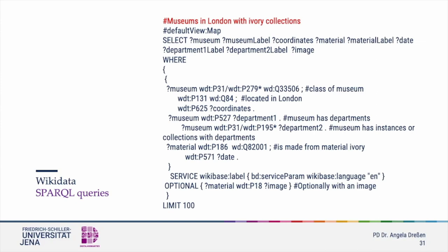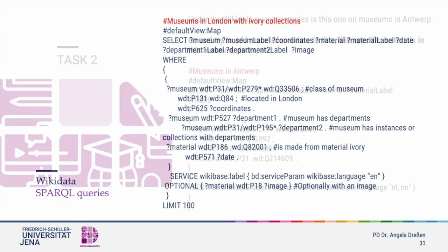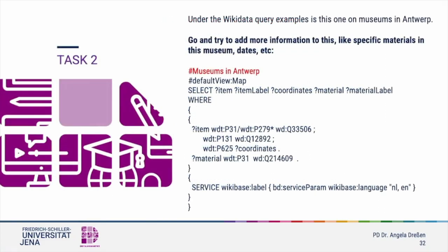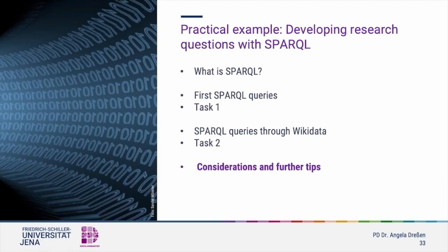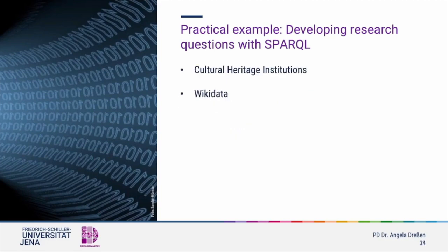At the bottom, the optional information regards the results being in English and possibly containing an image if there is one. Now here is a task for you — go and try to add more information to this last query. Now that you are familiar with the principles of querying data with SPARQL, you might think about how you can use it in your research. There is a difference when you use SPARQL through cultural heritage institutions versus Wikidata, as Wikidata uses its own ontology, whereas institutions rely on a variety of publicly available or sometimes homegrown ontologies.